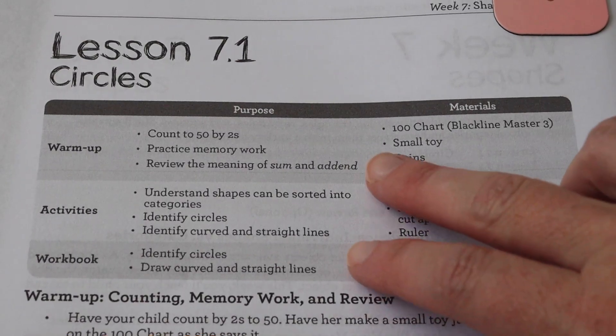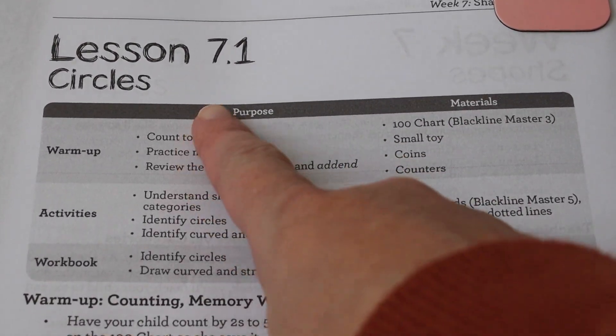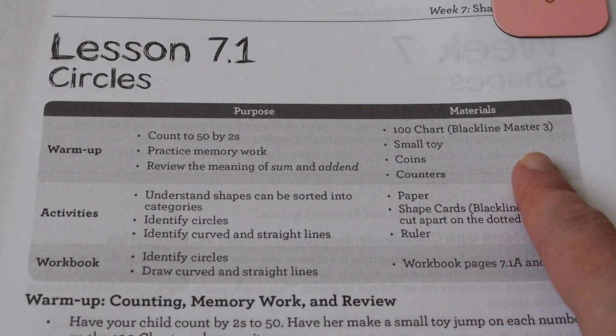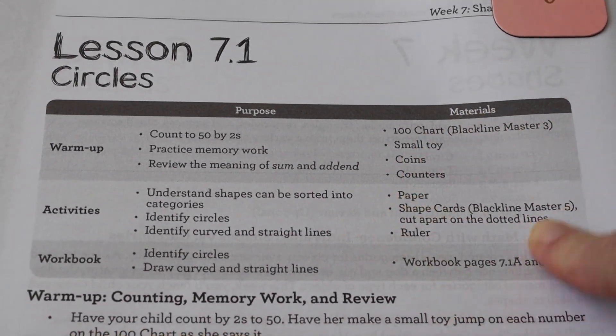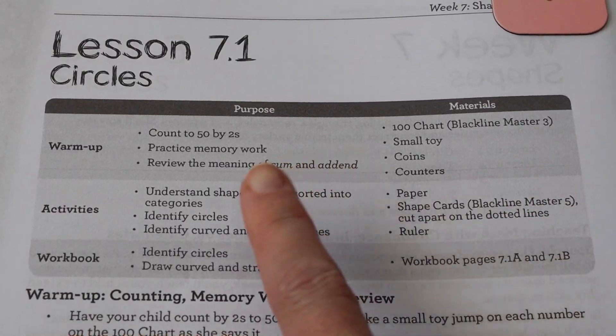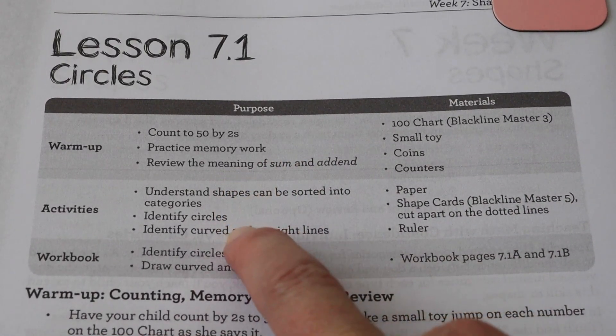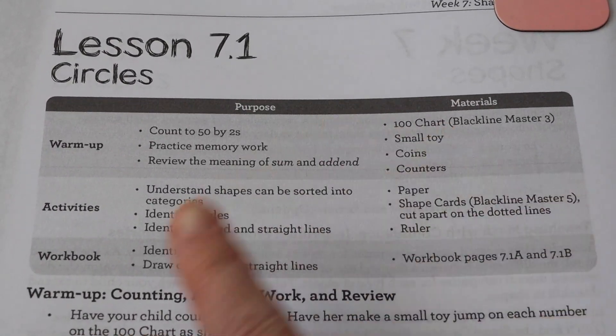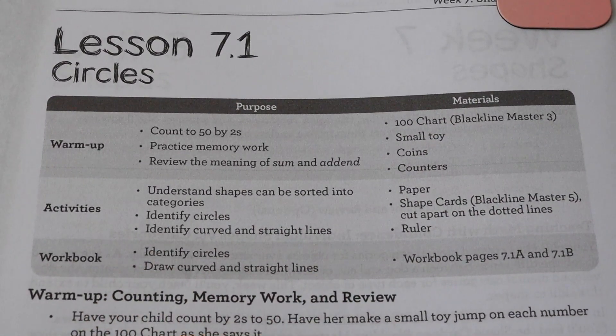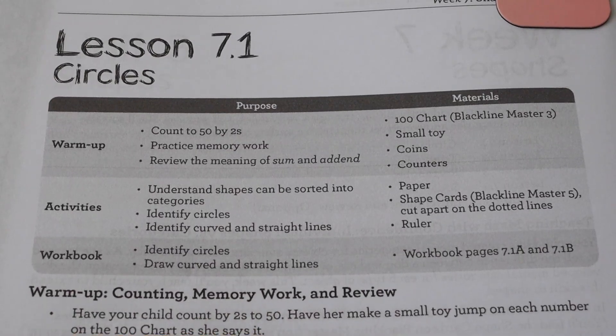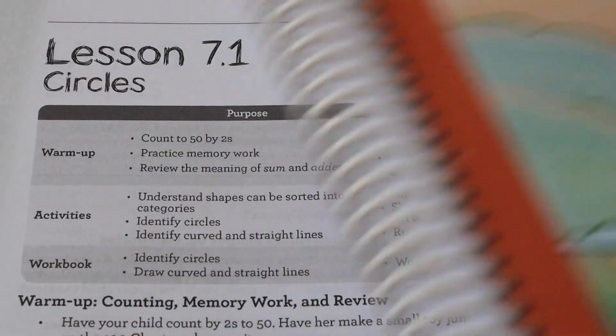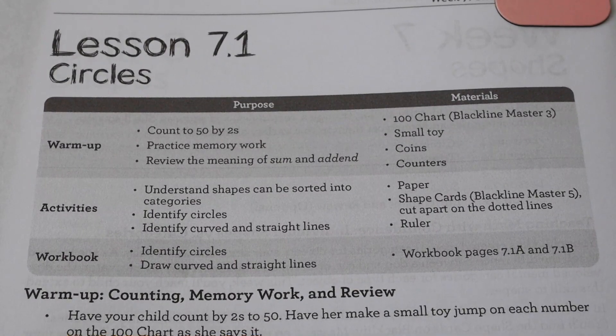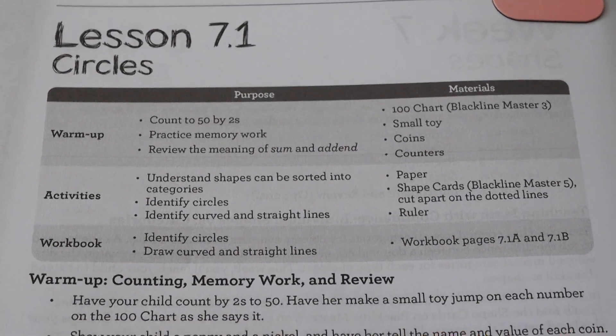Up here, it is going to tell you what you're going to be doing. So it's the purpose of it, which is just fabulous. And then the materials you're going to need. So I love this because I can get it set up before we start our lesson. Then it's going to be your activities. So this is the lesson part and the materials you'll need for that. And then your workbook and what they're going to be doing in their workbook. And that's what they do in this, which is independent for the most part. Younger kids are probably going to need a little help. But for the most part, my kids can do it fairly independently.